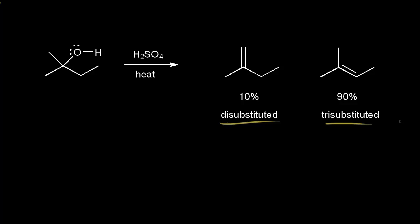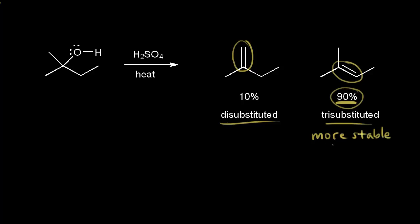Now let's think about regiochemistry. For this reaction, it's the region of the molecule where the double bond forms. For the di-substituted product, the double bond formed in this region, and for the tri-substituted product, the double bond formed in this region. The tri-substituted product is the major product, and it's also the more stable alkene. Remember, the more substituted your alkene is, the more stable it is. The more stable or more substituted product is called the Zaitsev product. This E1 reaction is regioselective because it has a preference to form the more stable, more substituted Zaitsev product.